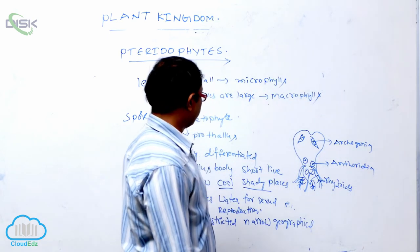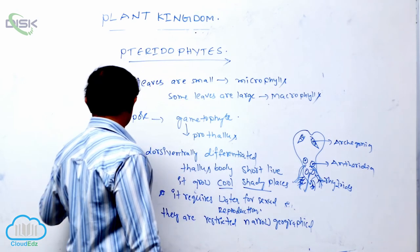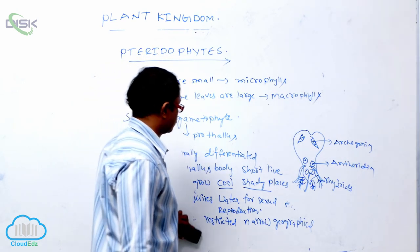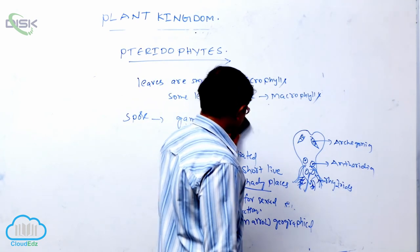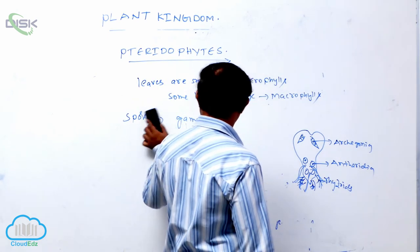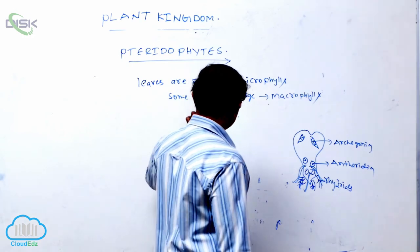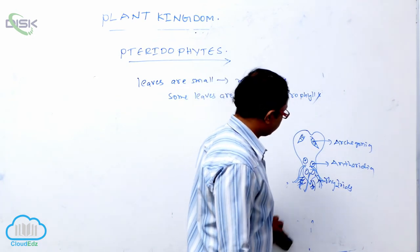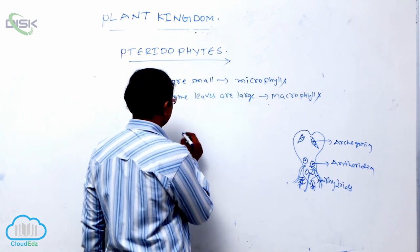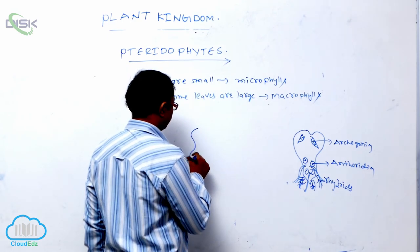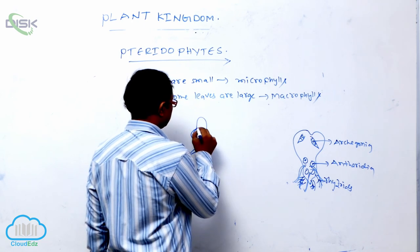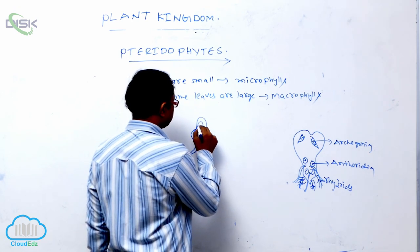The gametophyte is retained on the sporophyte for some time. When the antheridia produce male gametes, these male gametes are multiciliate. They are known as spermatozooids.